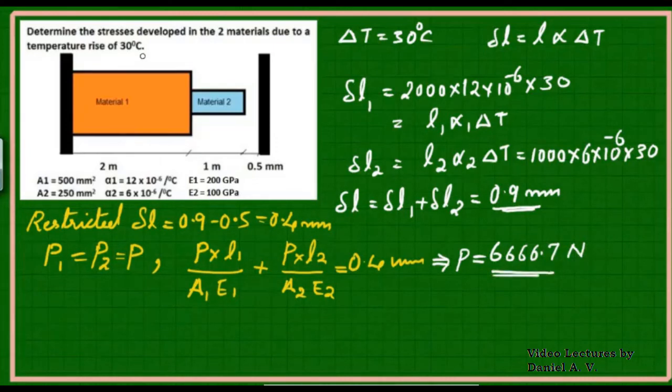We are asked to calculate the stresses. We know that stress in a material is equal to force divided by area. For the first material, area is given as 500 mm². So this value of P divided by 500 mm² is going to give me a value of 13.33 MPa.